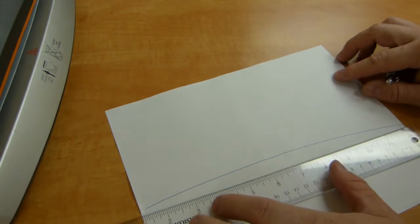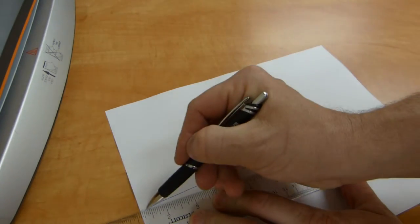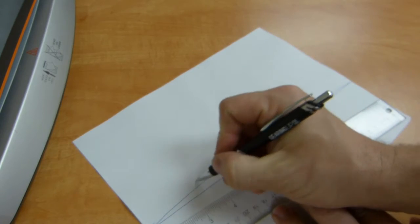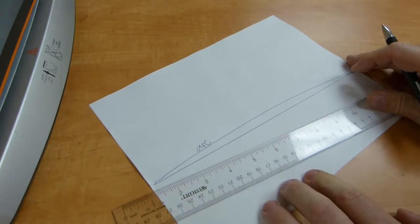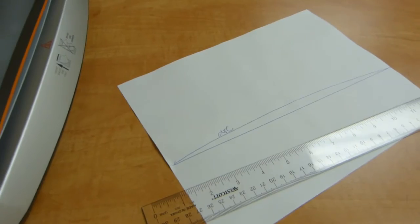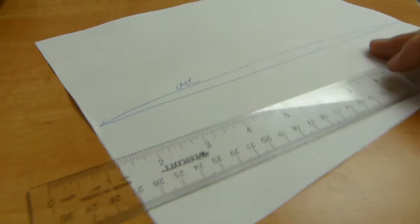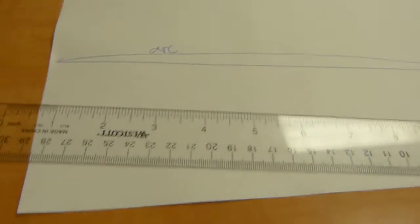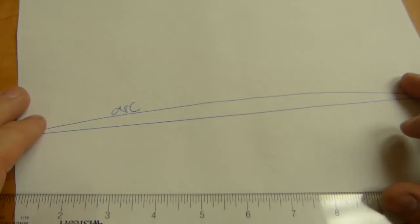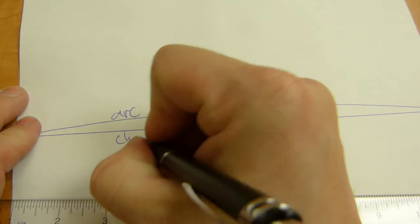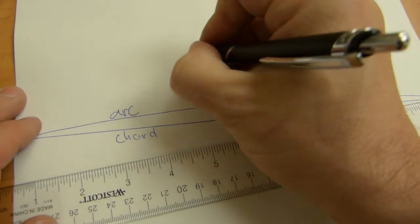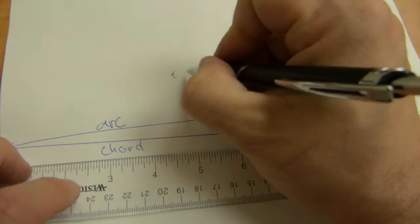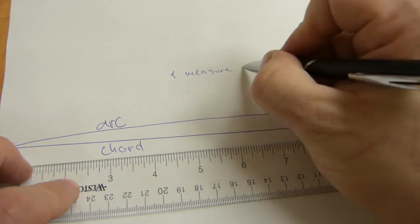Here is approach one, we can calculate. With a straight ruler, you can draw, if this one is the arc, part of the circumference. If this one is the arc, this one is the cord. You need to, step one, measure the cord.